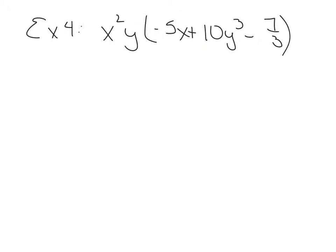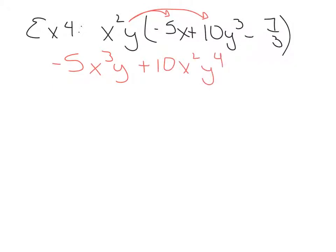Example 4 is on the top of page 106. We have x squared y times negative 5x plus 10y cubed minus 7 thirds. This is a trinomial — there are three terms. This is a monomial. Whenever you multiply a monomial, you distribute. Times the first term gives us negative 5x cubed y. Times the second term is plus 10x squared y to the fourth — x squared doesn't have any other x's, so it's just x squared, and y1 times y cubed makes y to the fourth. Then minus 7 thirds x squared y, since there are no variables on that last term, so these variables just carry down.